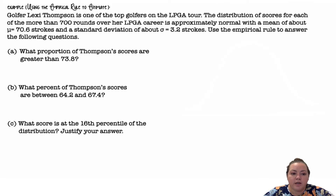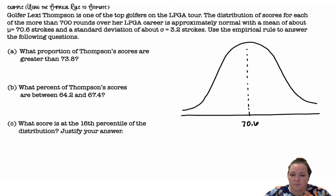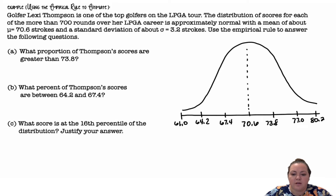Using the empirical rule to answer this question: Golfer Lexi Thompson is one of the top golfers on the LPGA Tour. The distribution of scores for each of more than 700 rounds over her LPGA career is approximately normal with a mean of about 70.6 strokes and a standard deviation of about 3.2 strokes. I'm going to start by drawing this normal distribution. 70.6 is the mean. As I move to the right I'm adding 3.2, and as I move to the left I'm subtracting 3.2 each time.